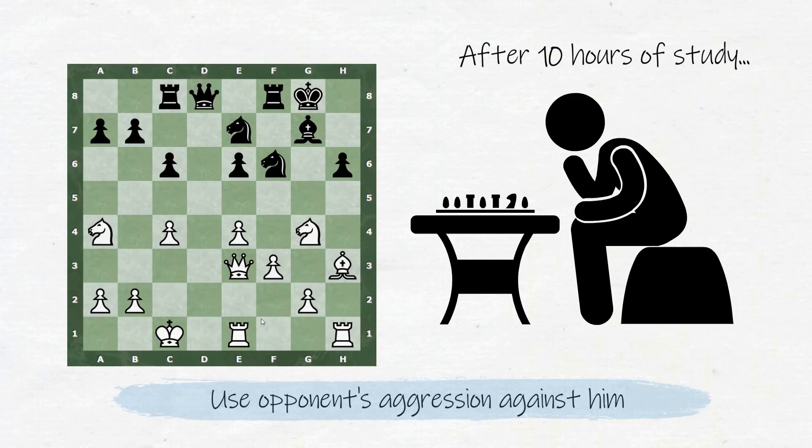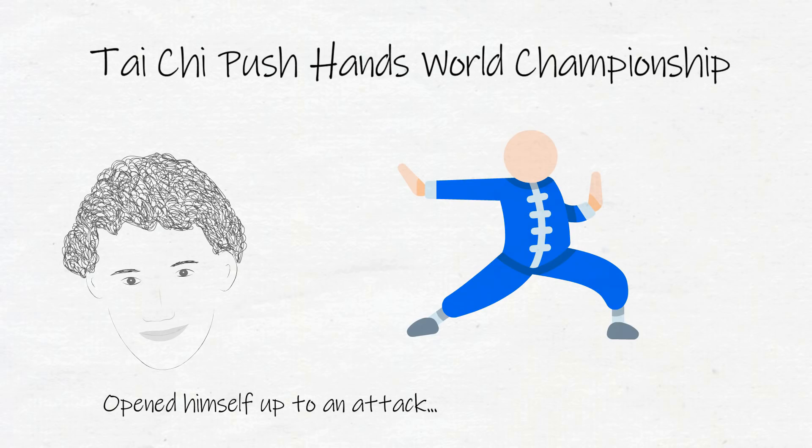But then he remembered the principle that he'd learned from that painful chess match many years ago. He made a slight adjustment and opened himself up to an attack, which allowed him to use his opponent's aggression against him. It worked. Josh turned the match around and took home the Tai Chi Push Hands World Championship.